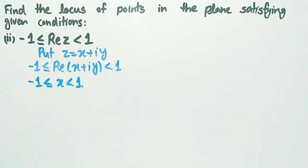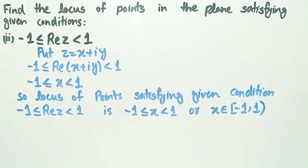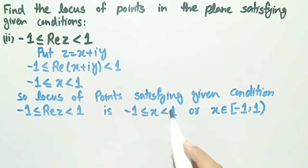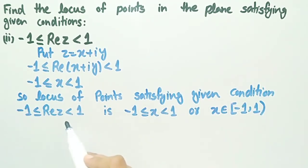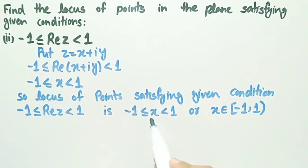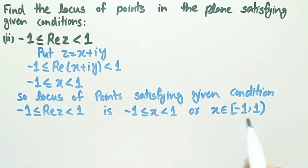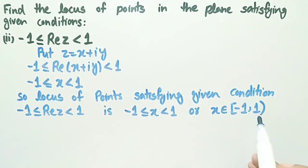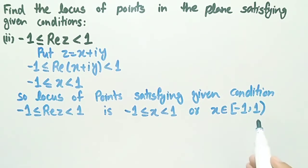So the locus of points satisfying the given condition, minus 1 less than or equal to real part of z less than 1, is minus 1 less than or equal to x less than 1, or the half-open, half-closed interval minus 1 to 1, such that x belongs to this interval.